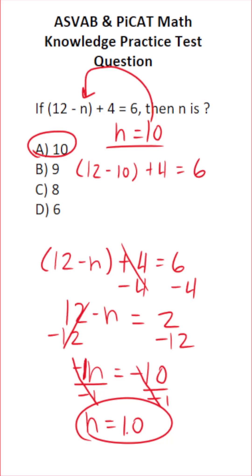12 minus 10 is 2 plus 4 equals 6. 2 plus 4 is 6. Does 6 equal 6? It does, and because it does, we're confident that A is the correct answer.